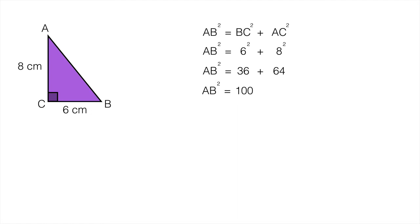Now that I'm at this stage I need to find the square root. So AB is equal to the square root of 100, and the square root of 100 is 10. So AB is 10 centimeters.